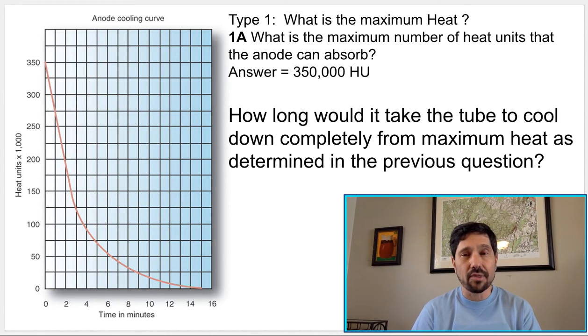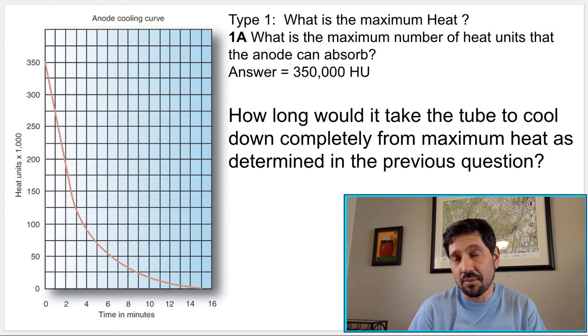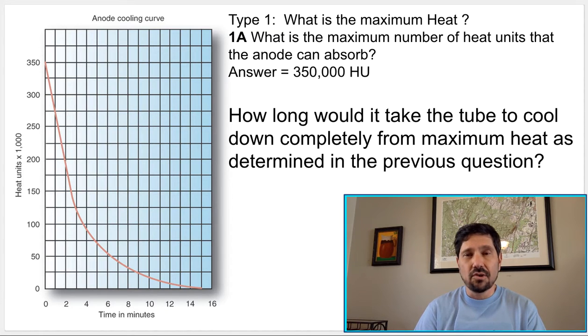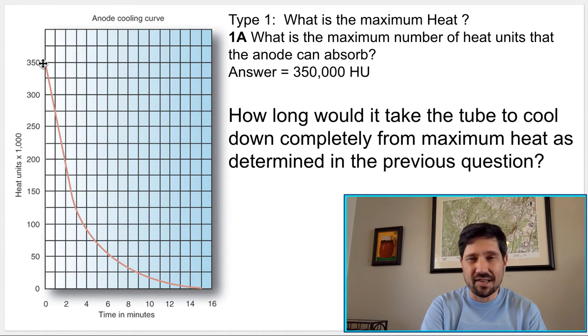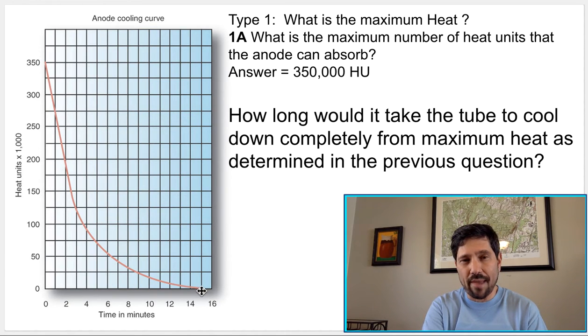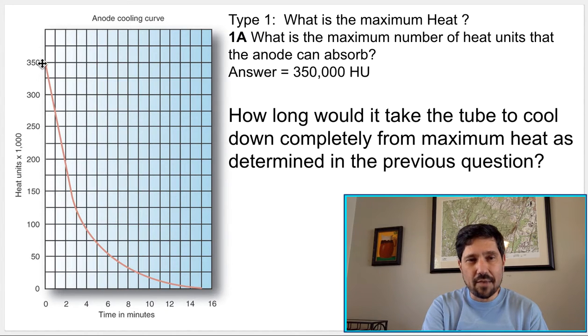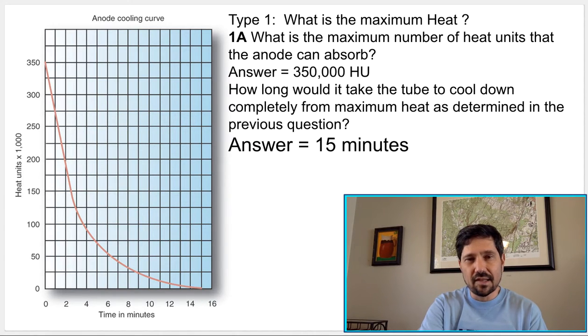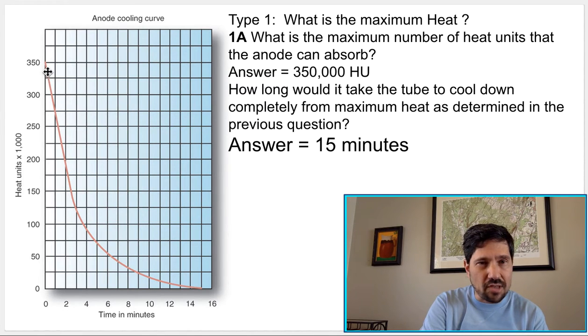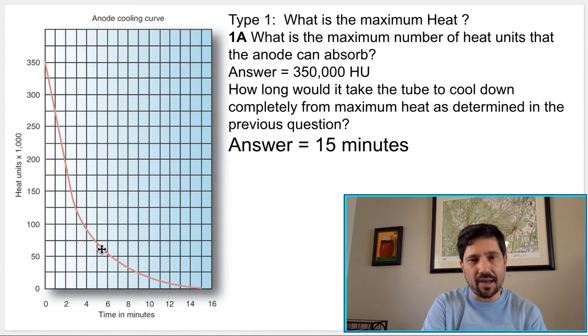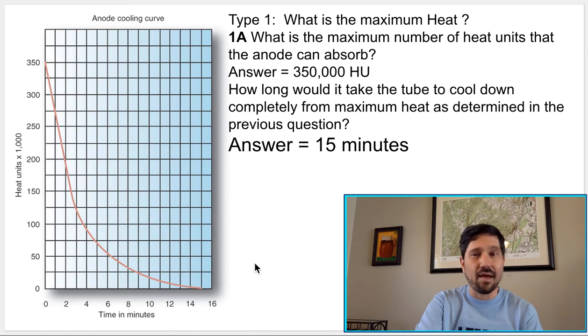A companion question that might go with it would be how long does it take the tube to cool down completely from that maximum heat, as determined in the previous question. So to do that, you'd say, well, if I used 350,000 heat units, they want me to cool down completely. Cooling down completely means getting all the way back to zero. It's going to take me from here to here, from zero minutes to 15 minutes. It's going to take me 15 minutes to cool down. It shows every minute it cools. It takes 15 minutes for it to get all the way back down to completely cool.